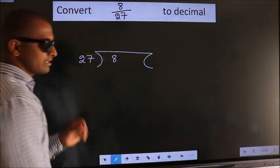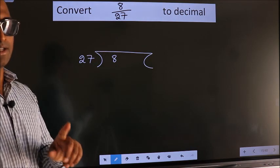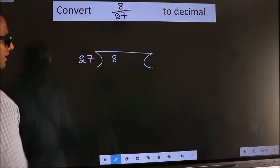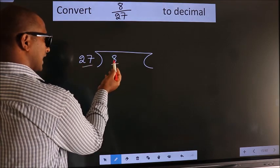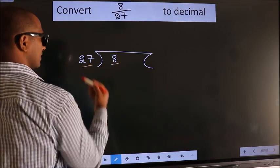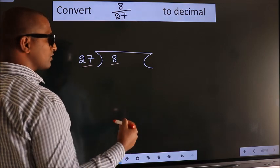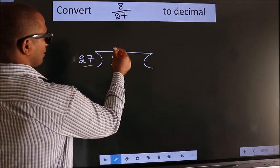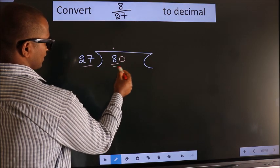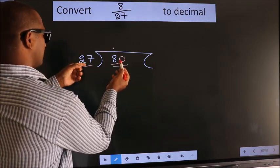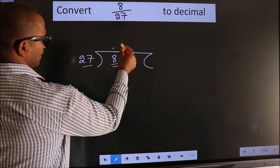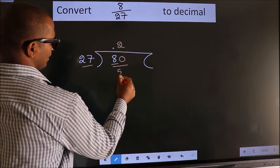This is your step 1. Next, here we have 8 here, 27 here. 8 is smaller than 27, so what we should do is put a dot here, take 0 here. So 80, a number close to 80 in the 27 table is 27 times 2, which is 54.